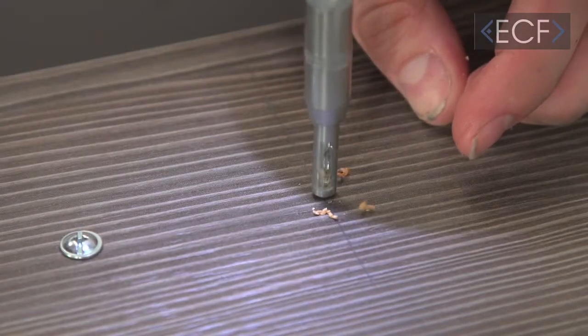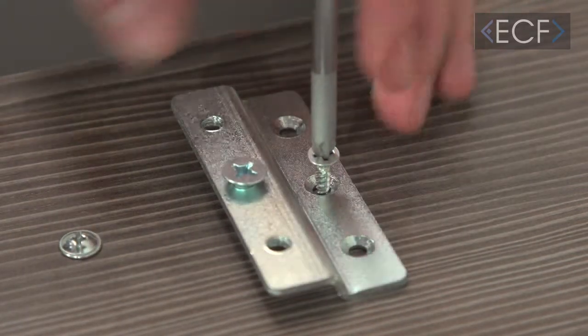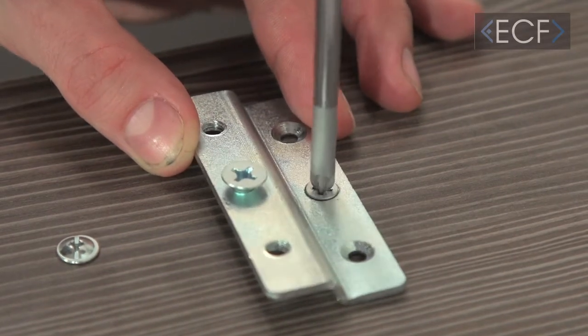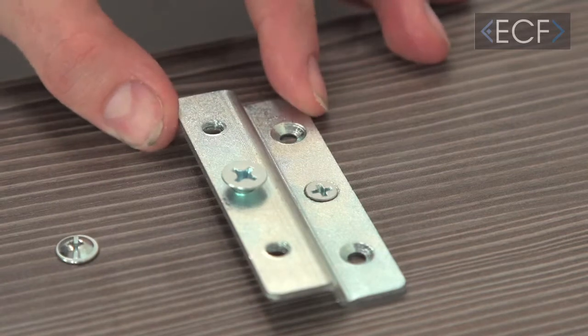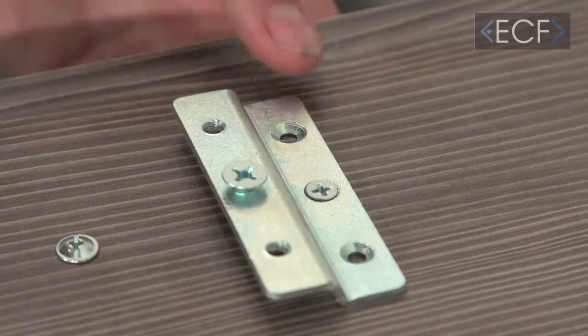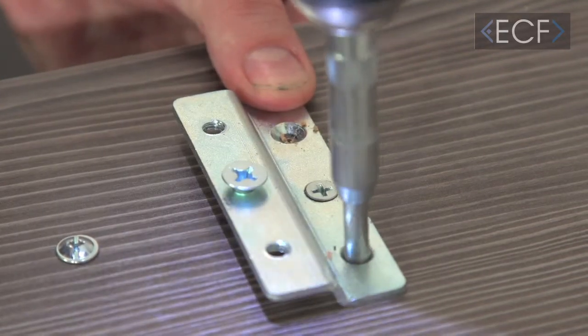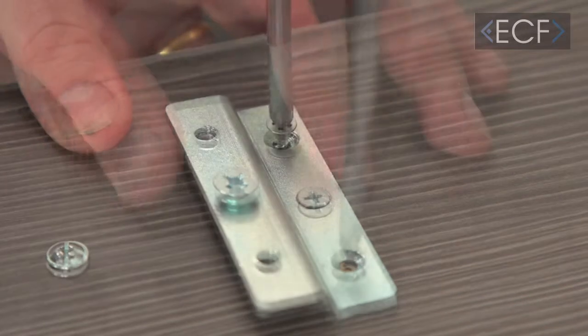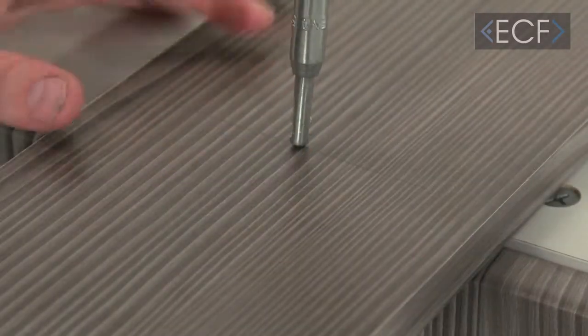Pilot a hole on the center point you've marked, then screw one of the brackets into position. Make sure it's aligned on the line you've drawn, then pilot for the other two screws and screw into position. Repeat this for the bottom of the door.